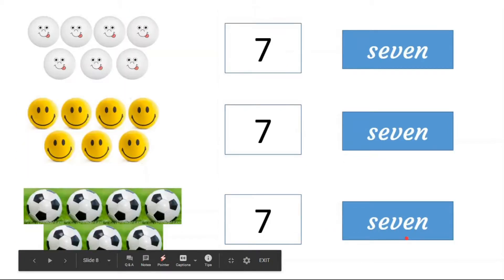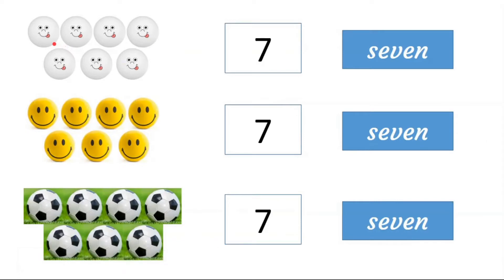6. How many smallies are here? 1, 2, 3, 4, 5, 6, 7. 7. How many smallies are here? 1, 2, 3, 4, 5, 6, 7. 7. S, E, V, E, N.